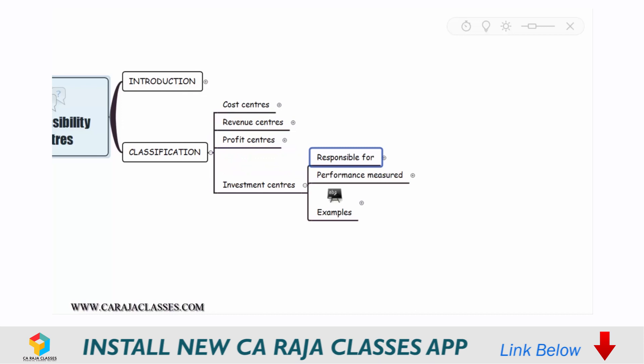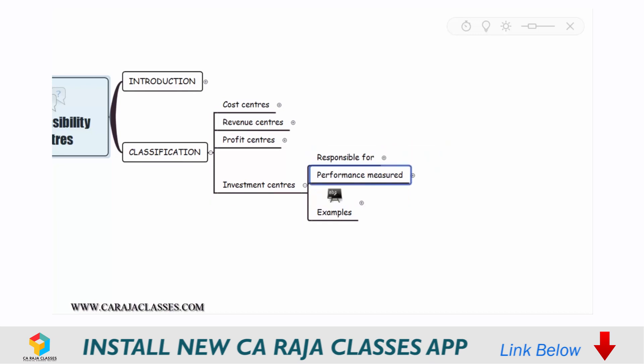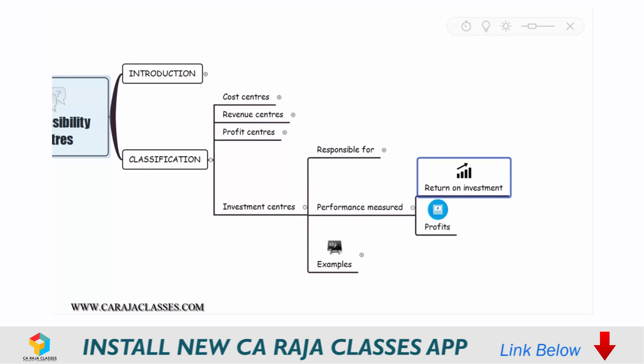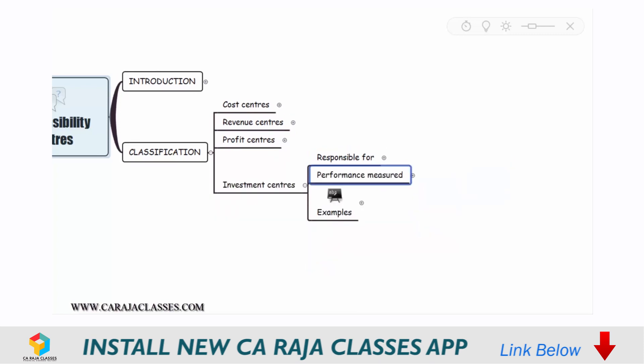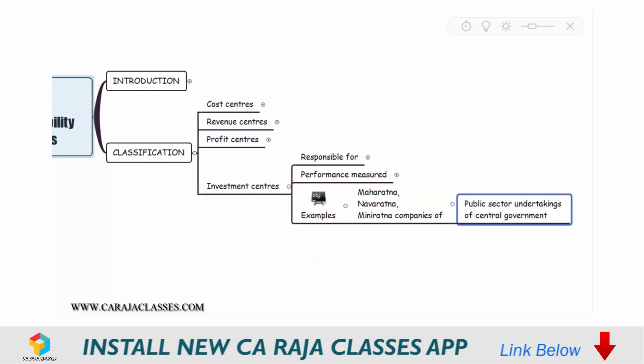Finally, investment centers are those centers which are responsible for profitability as well as capital investment decisions. The performance of investment centers will be measured against return on investment and profits. Examples can be Maharatna, Navaratna, and Miniratna companies of public sector undertakings of the central government.